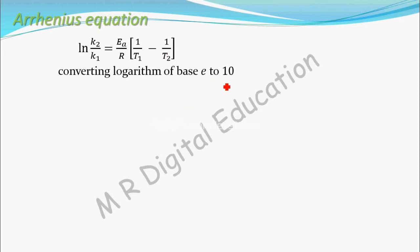Converting logarithm of base e to 10. This is logarithm of base e. To convert this base e to 10, you have to multiply here by 2.303. So, 2.303 log of, this is base 10 log. So, log of k2 by k1 equal to Ea by R into 1 by T1 minus 1 by T2.